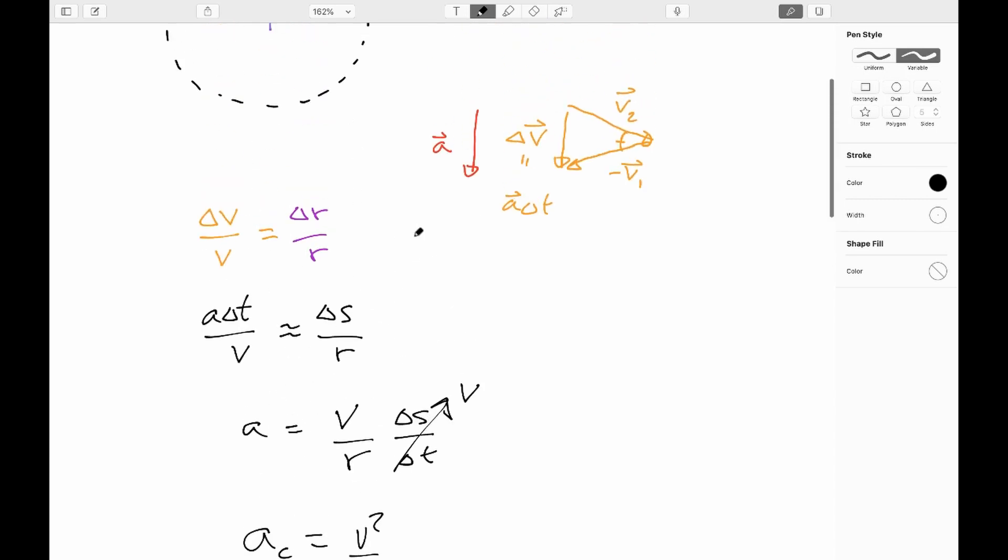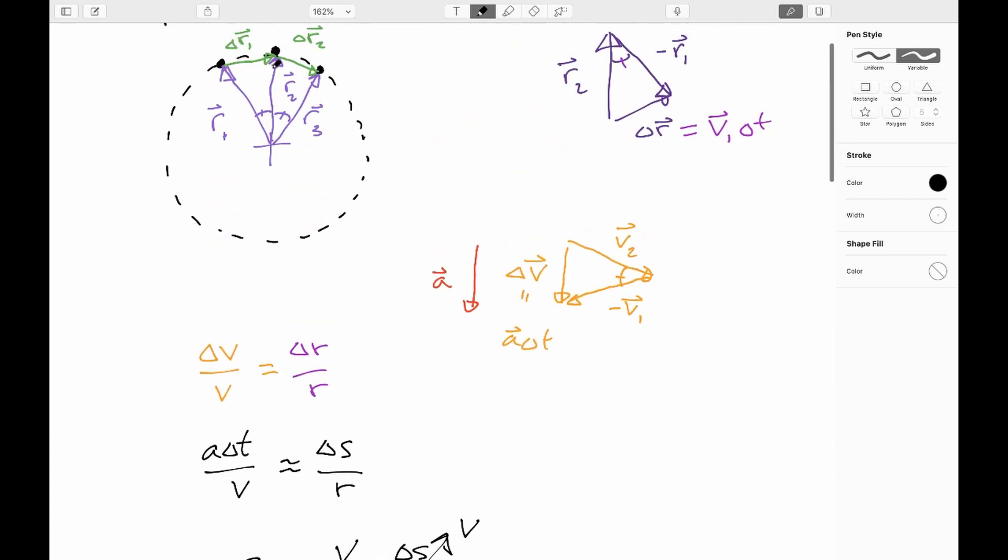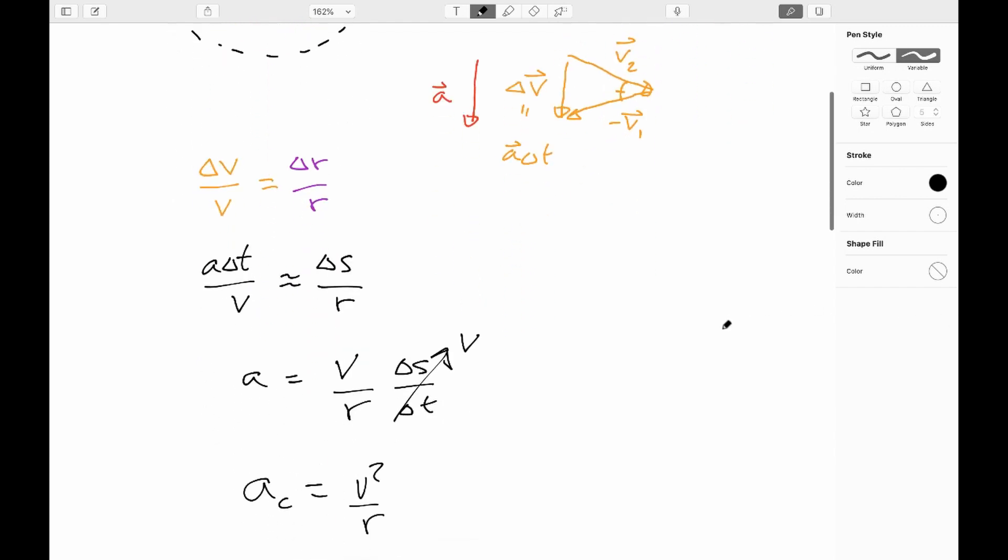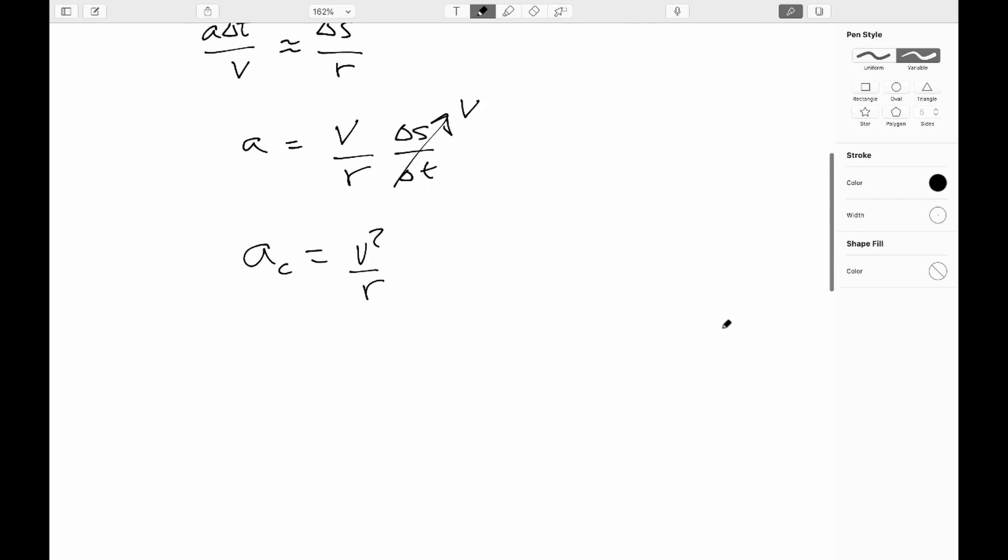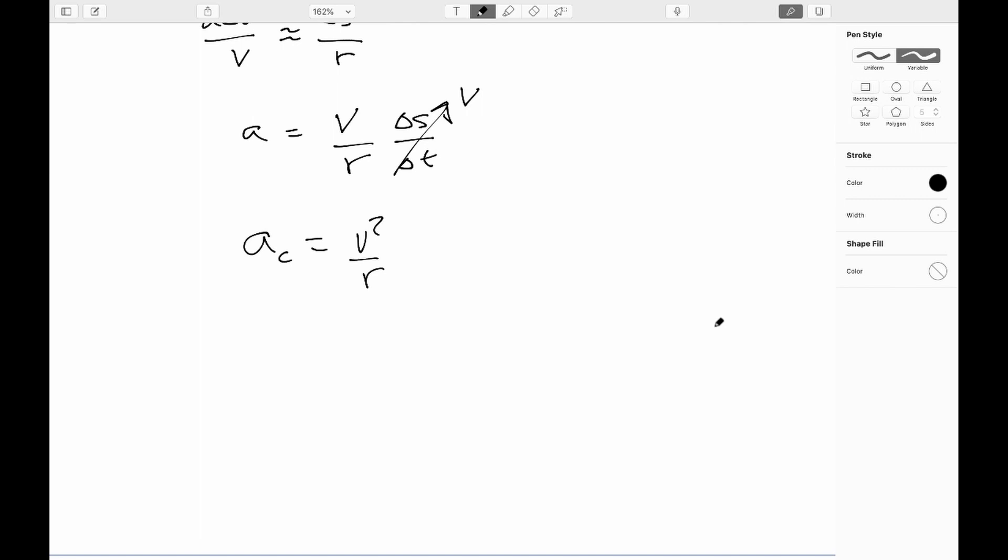So when you're going around in a circle at constant speed, you accelerate into the center of the circle and the magnitude of that acceleration is V squared over R. So the faster you go, the bigger the acceleration, the tighter the turn, the bigger the acceleration. And again, this is directed perpendicular to the motion, so we're not changing the speed.